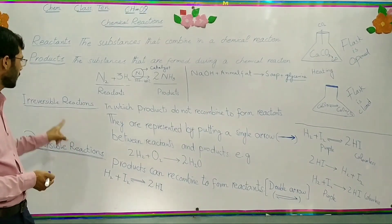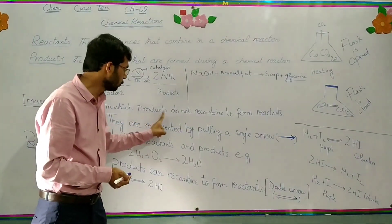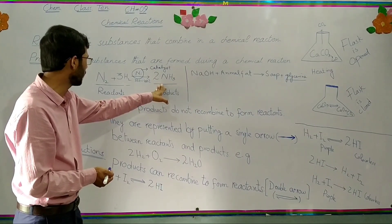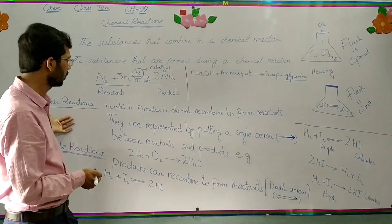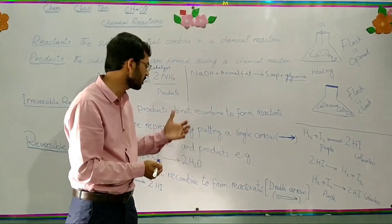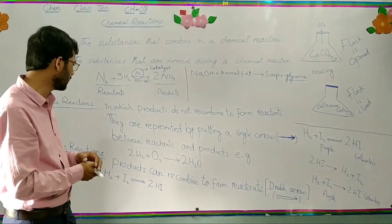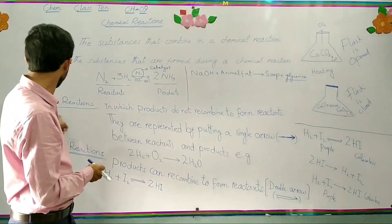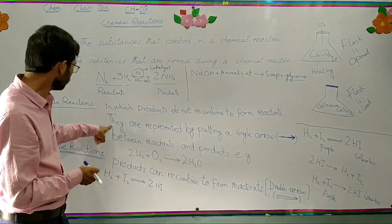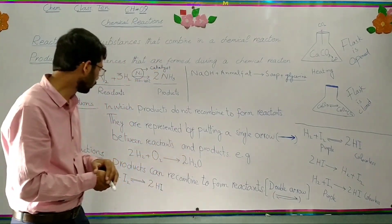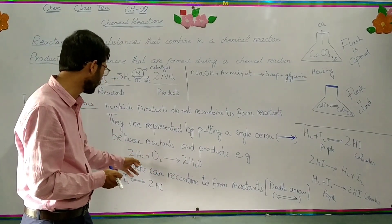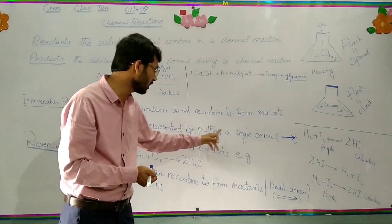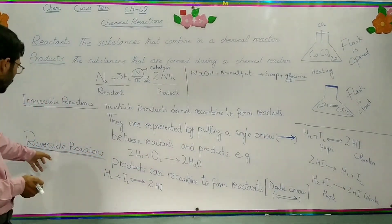What are irreversible reactions? Irreversible reactions are those type of reactions in which products do not recombine to form reactants. For example, two moles of hydrogen and one mole of oxygen form two moles of water. Irreversible reactions are indicated by a single arrow sign between reactants and products.